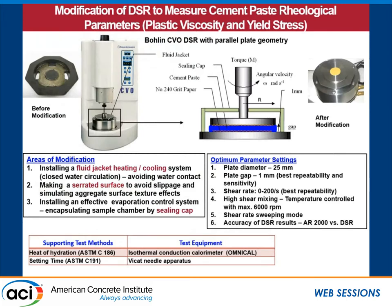This is the modification that we made. On the left side you see the dynamic shear rheometer — it's a parallel plate rheometer. The asphalt sample is kept between the two plates and it just rotates. One key modification we noticed is that the same fluid jacket cannot be used for cement paste. Also, because the plates are very smooth, if we don't use any kind of shear-rated surface, slippage will introduce some error. And evaporation of the cement paste during measurement is also an issue, so we need to make it sealed so there will be no evaporation loss.